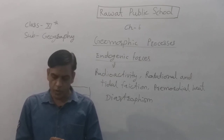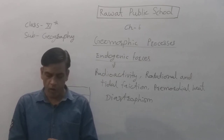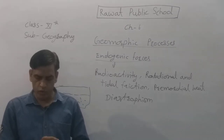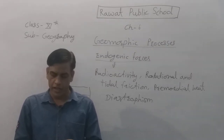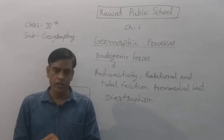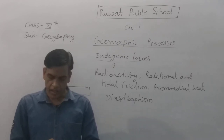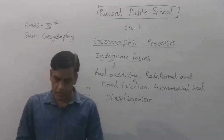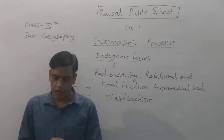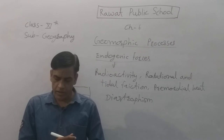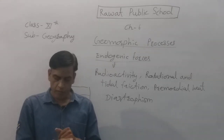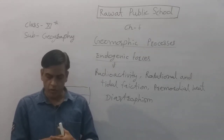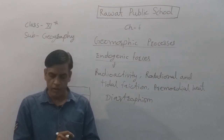Diastrophism includes organic processes involving mountain building through folding and affecting long and narrow belts of the earth's crust; epi-organic processes involving uplift or warping of large parts of the earth's crust; earthquakes involving local, relatively minor movement; and plate tectonics involving horizontal movement of the crust.